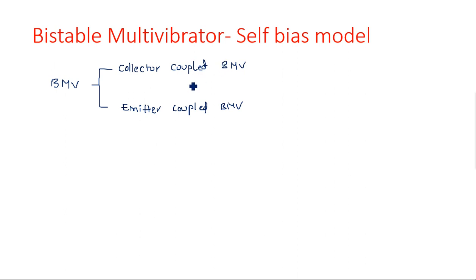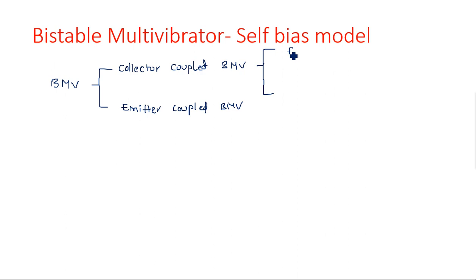In the collector coupled type, the collectors of both transistors — two transistors must be there in a bistable multivibrator — are connected together to balance, so that Q1 should be on when Q2 is off, and Q2 should be on when Q1 is off. That push-pull configuration can be achieved by emitter or collector coupling. In collector coupled configuration there are again two types: one is fixed bias and the second one is self-bias bistable multivibrator.